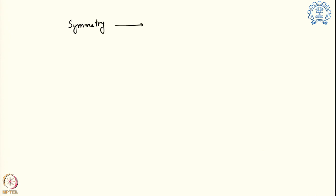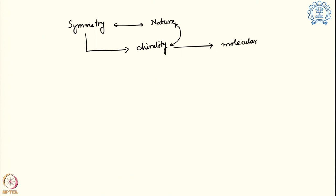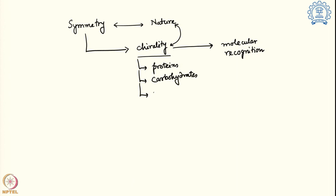Over the last few classes we have been discussing about symmetry and how it is an integral part of nature. One particular portion of symmetry is chirality, and nature uses chirality as one of its tools for molecular recognition. Chiral molecules in the forms of proteins, carbohydrates, and nucleic acids all become important because all these molecules, which are an integral part of the biological segment, are chiral in nature.